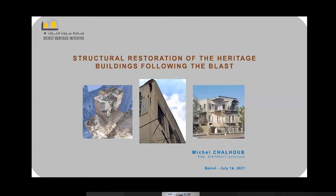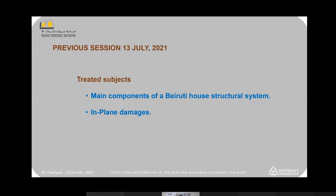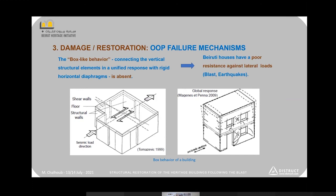Thank you for attending this session. Yesterday we covered the main components of a Beiruti house structural system, going from the foundation to the columns and walls, along with in-plane damages and how to repair them. Today we will go through out-of-plane failure mechanisms and damages affecting horizontal elements like beams and slabs.